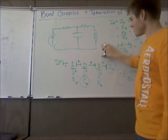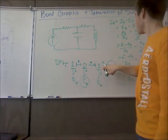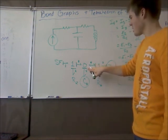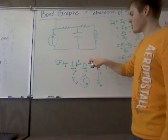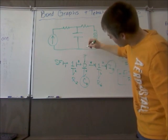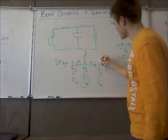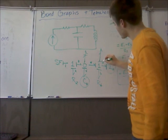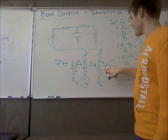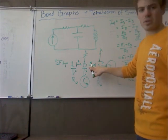One junction usually has all but one causal stroke around it because of the series junction. And the parallel junction will only have one causal stroke on it, the rest will be away. So if we had another resistor off here, the causal stroke would go up here for it. There can only be one over here. Likewise if we had a resistor right here, it would have to have the causal stroke down here because there can only be one source flow into one junction and there can only be one source effort into a zero junction.